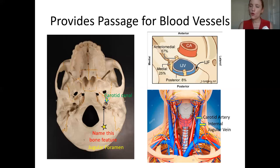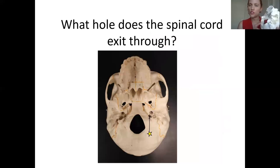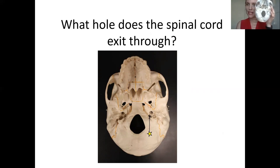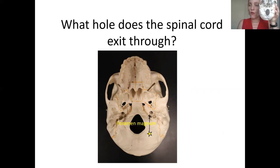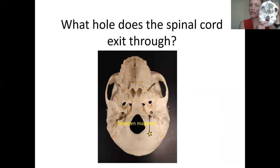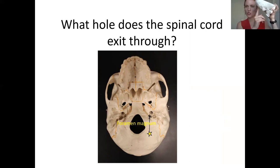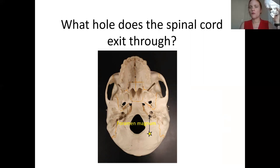So those are some foramina and canals associated with blood vessels. The biggest hole — the foramen magnum — is so large because the spinal cord passes through it, then runs down the canal created by the stacked vertebrae.